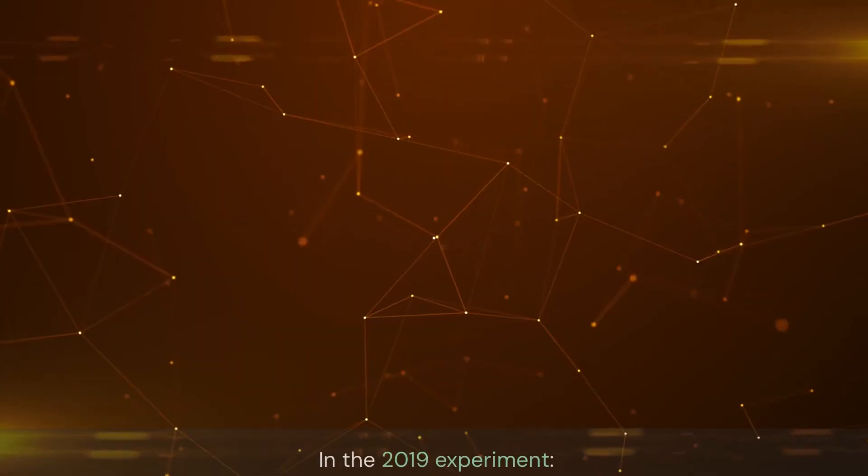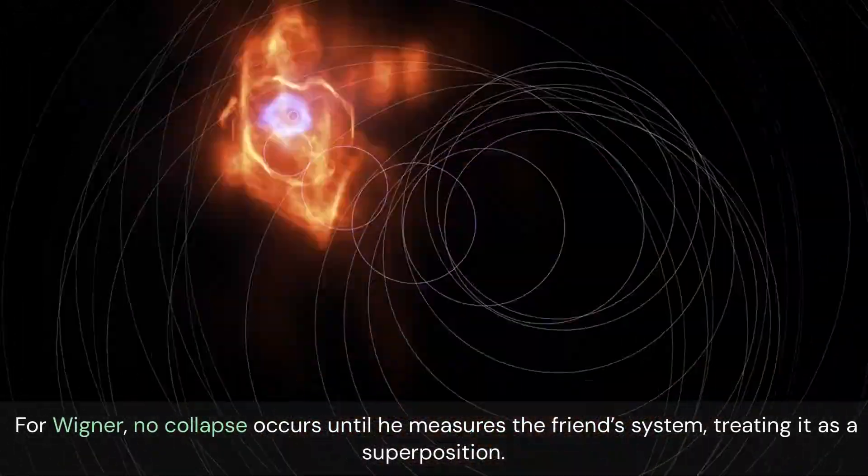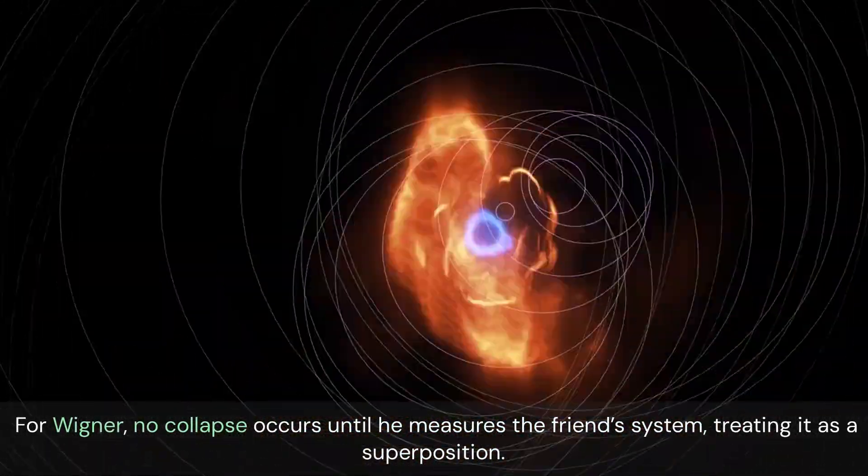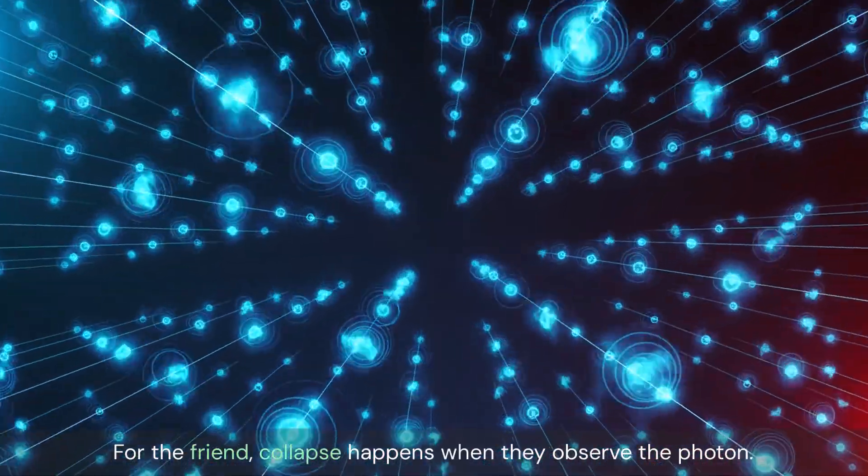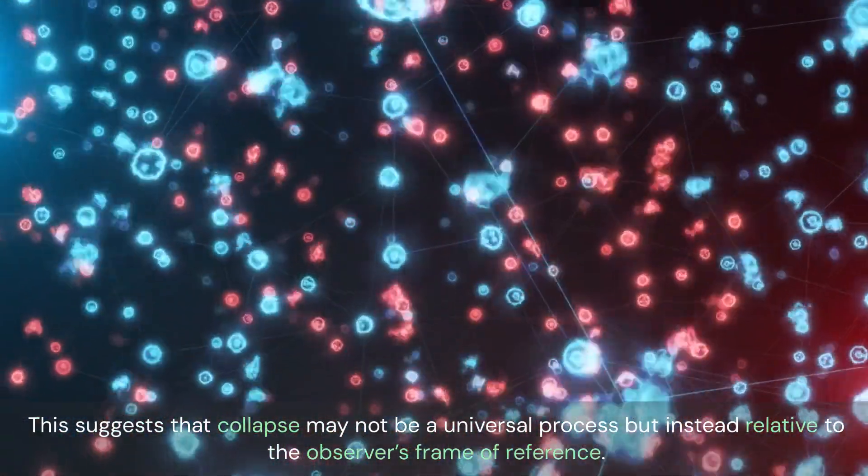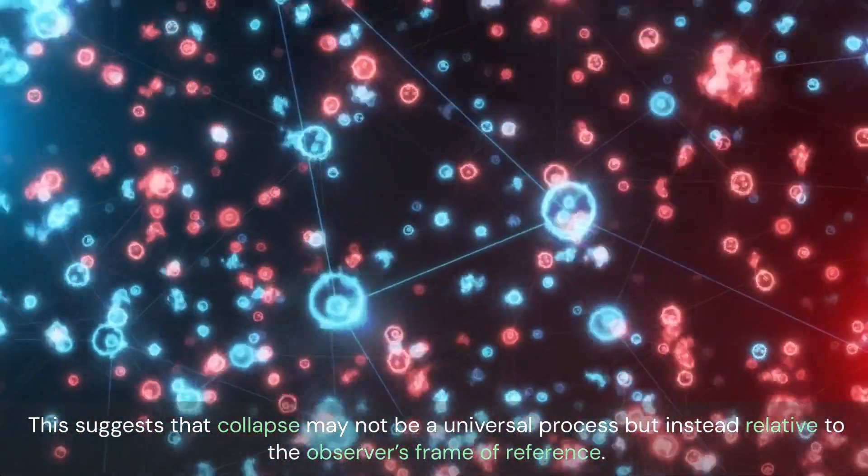Implication. In the 2019 experiment, for Wigner, no collapse occurs until he measures the friend's system, treating it as a superposition. For the friend, collapse happens when they observe the photon. This suggests that collapse may not be a universal process but instead relative to the observer's frame of reference.